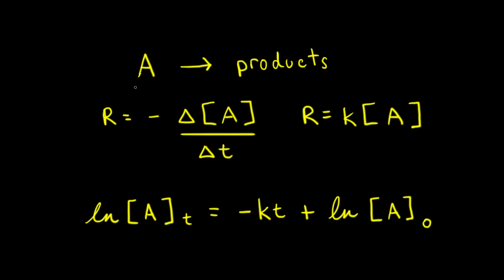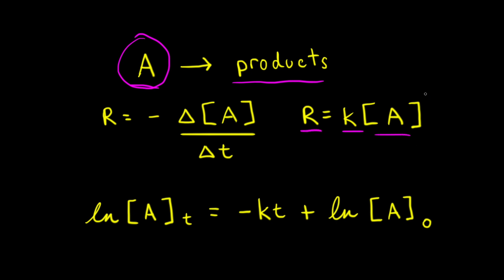Let's say we have a hypothetical reaction where reactant A turns into products and that the reaction is first order with respect to A. If the reaction is first order with respect to reactant A, for the rate law we can write that the rate of the reaction is equal to the rate constant k times the concentration of A to the first power.